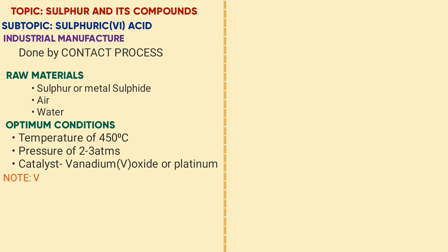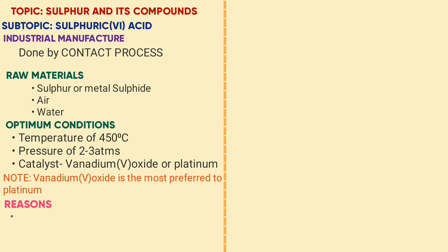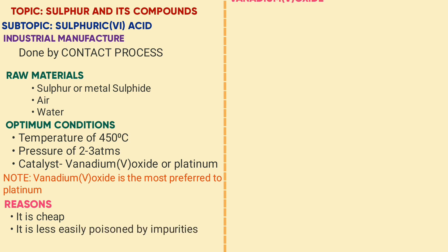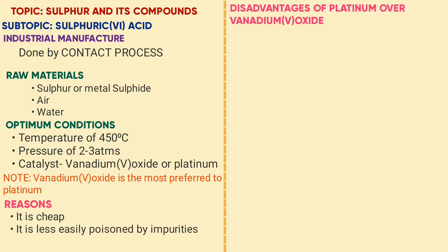Note that vanadium pentoxide is most preferred over platinum. The reason is it is cheap and it is less easily poisoned by impurities. The disadvantages of platinum are that it is expensive and it is easily poisoned by impurities.